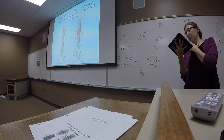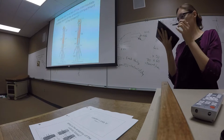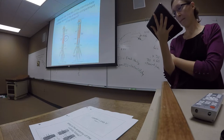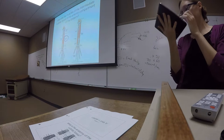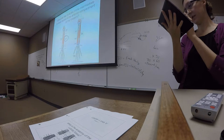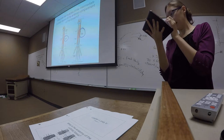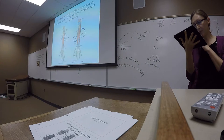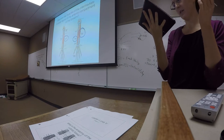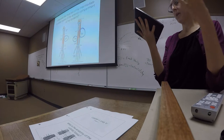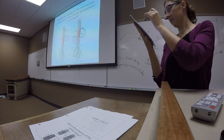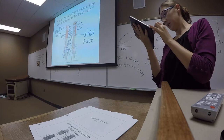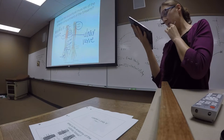Then we have the intermediate and deep layers of the anterior compartment. The intermediate layer has just one muscle: the flexor digitorum superficialis. The deep layer has the flexor digitorum profundus and flexor pollicis longus for the thumb. Regarding where the digit flexors insert on the bone: the palmaris longus inserts on the proximal phalanges, the flexor digitorum superficialis inserts on the middle phalanges, and the flexor digitorum profundus inserts on the distal phalanges.